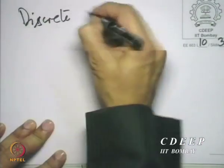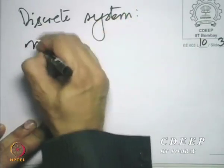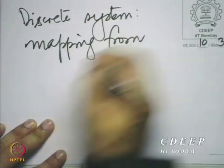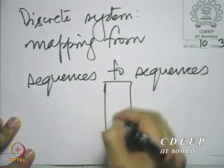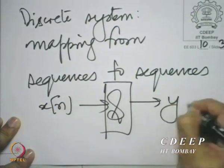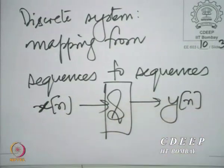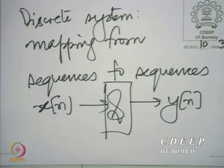What is a system or what is a discrete system? A discrete system is a mapping from sequences to sequences. You have a system where you have an input sequence x[n] and output sequence y[n], and this mapping between sequences — it is important to understand a system as a mapping from sequences to sequences. If the system is memoryless, it also becomes a pointwise mapping, but it need not be. You must think of it as a mapping of the whole sequence x[n] to the whole sequence y[n].